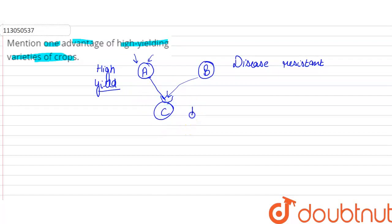Crop C will be high yielding and also disease resistant. So this is a high yield variety of crop.